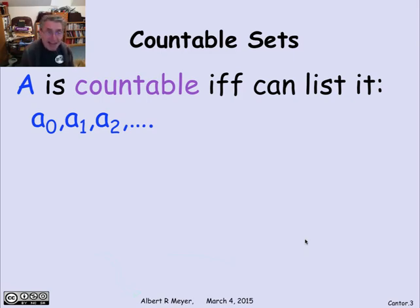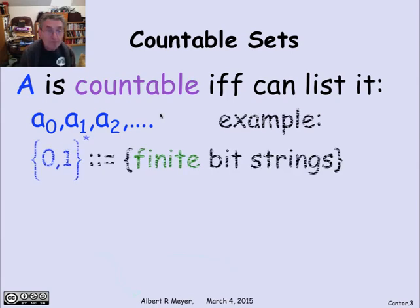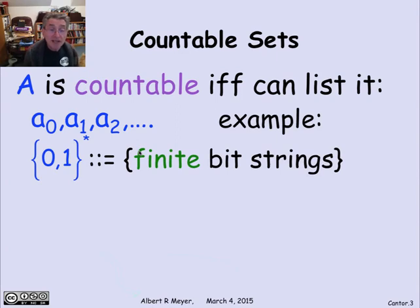A set is countable if you can list it, possibly with repeats. So A is countable if there's a sequence A0, A1, A2, such that every element in the set A shows up at some point in the list, possibly more than once, and the only things in the list are elements of A. We saw as an example that the finite bit strings — the finite strings of 0s and 1s, or the finite binary words — are an example of a countable set.